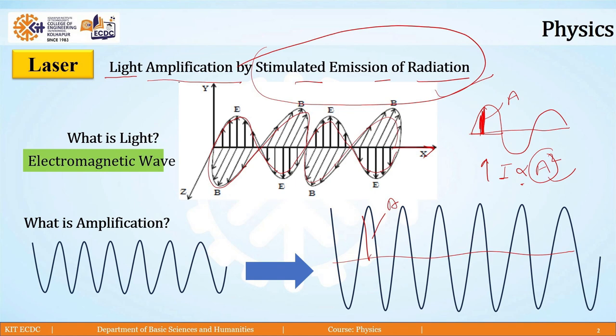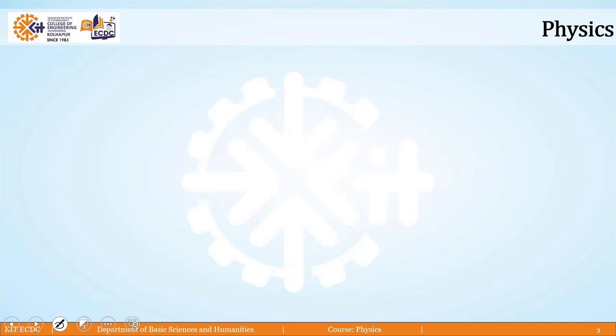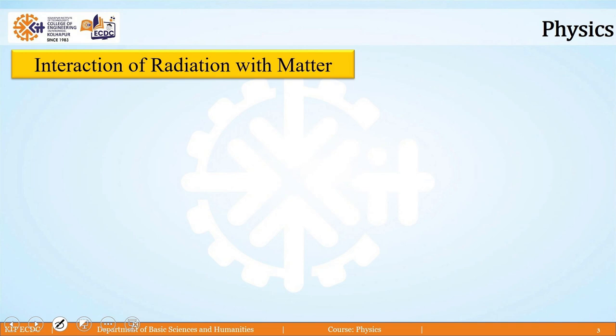To understand stimulated emission of radiation, we must first understand the basic interaction of radiation with matter. Interaction means a give-and-take relation. Radiation is energy — energy of light, energy of photons — and that energy is given by hν, where h is Planck's constant and ν is the frequency. How does this energy interact with matter? Here, matter we can consider as an atom, molecule, or electron.